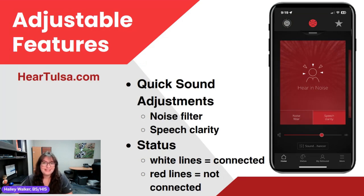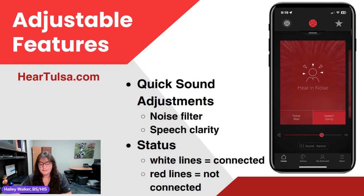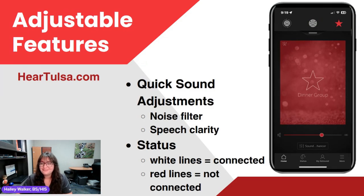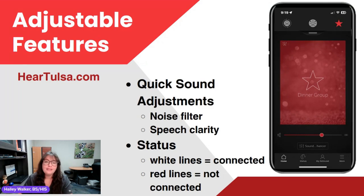In hear in noise, we have that same feature. Sometimes it gives you a 'hear everyone' option — I wouldn't recommend that as much because it's kind of overriding some of the programming that has already been set. So I would stick with just noise filter and speech clarity. If you're seeing any problems, contact your hearing care specialist. On my dinner group page, we don't have those special features, so if we need more noise filter or speech clarity, we can hit the sound enhancer button right below the volume bar and adjust accordingly.